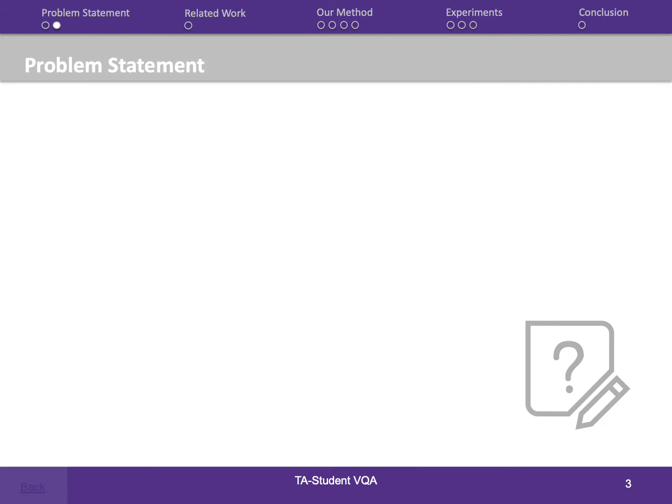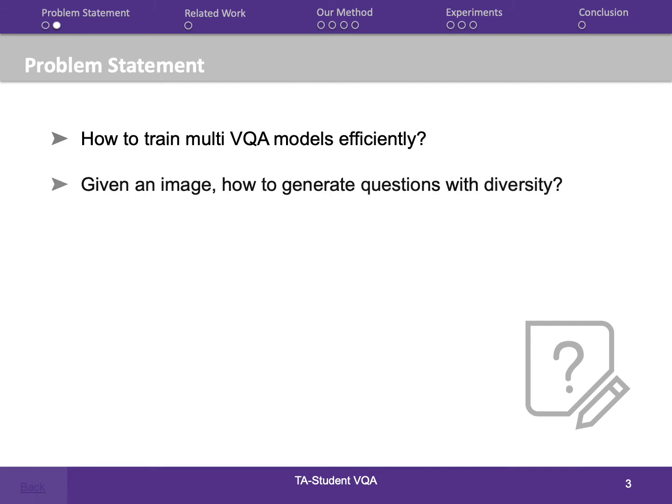Thus, our tasks become two: first, how to train multi-VQA models efficiently; and second, given an image, how to generate questions with diversity.